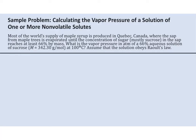Here's another example with Raoult's Law. Sucrose is the solute and it is non-volatile — that's just table sugar, a solid. They've given us the percent by mass, from which we'll be able to get the mole fraction, and they're asking us for the vapor pressure of the solution.